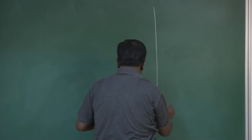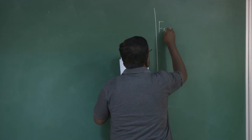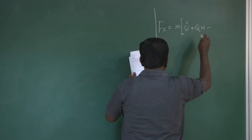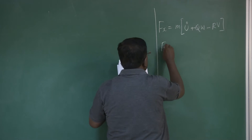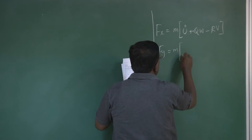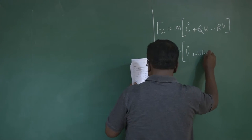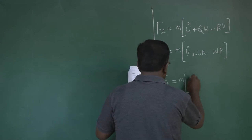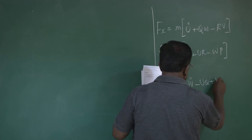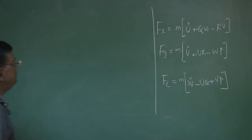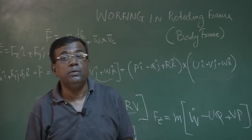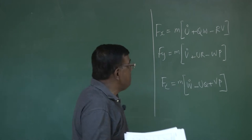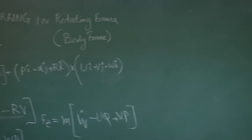For our ease of communication, I write fx equal to m(u-dot + qw - rv). So, fy equal to m(v-dot + ur - wp) and fz equal to m(w-dot - uq + vp). We have not asked the question: what are these fx, fy, fz composed of? We will come to that question. We have more focus on the right-hand side — what is the kinematics part? Now, we also have to handle the other equation, which is the moment equation.